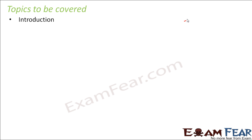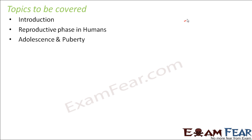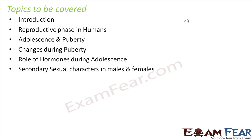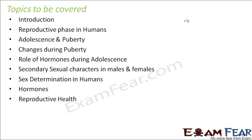Topics to be covered in this lesson are: Introduction, Reproductive phase in humans, Adolescence and puberty, Changes during puberty, Role of hormones during adolescence, Secondary sexual characters in males and females, Sex determination in humans, Hormones, and Reproductive health.